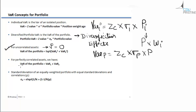When the assets are perfectly correlated, the correlation coefficient between those two assets is one. In that case, the VaR of the portfolio is given by the formula: VaR of asset one plus VaR of asset two. We will talk more about this formula in the coming slides.